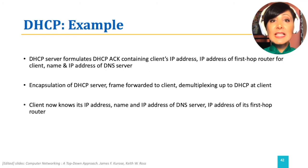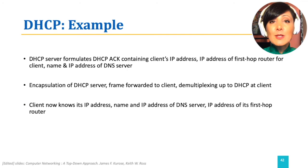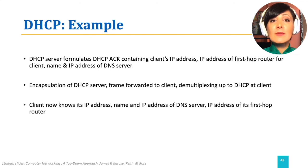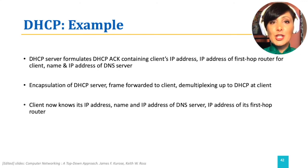The DHCP response from the DHCP server goes through a similar process. The server encapsulates it using UDP, IP, then the link layer protocol, and sends it to the client. Decapsulated again at the client, the client finds out its IP address and the other information from the application layer message of the DHCP.